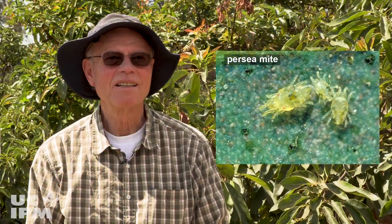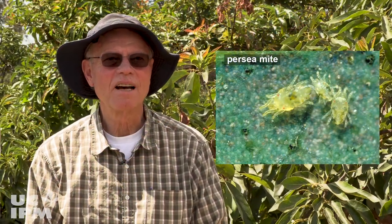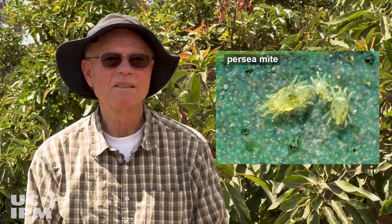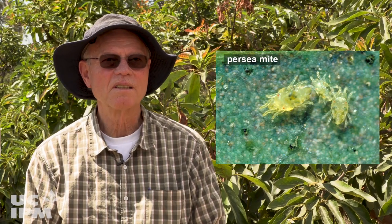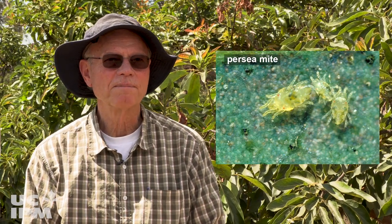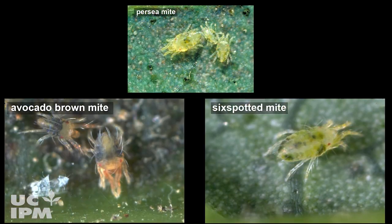Persea mite is a key pest of avocados and is present in nearly all of the avocado growing regions of California. Other mites, such as avocado brown mite and six-spotted mite, are only found sporadically, though they still have the potential to cause damage.